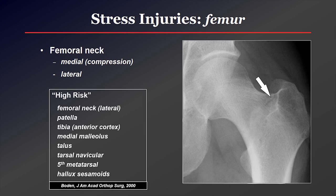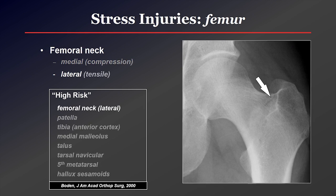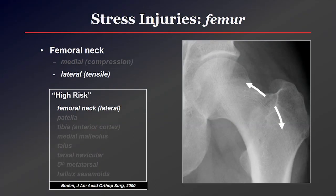The lateral femoral neck is an area of high risk for stress fractures, and here's a list of other high-risk stress fractures in the lower extremity. These are called high risk because they tend not to do well — they either have a high incidence of non-union or poor union, or they go on to displace. The lateral femoral neck is higher risk because that's the tensile side. With its convex architecture on the lateral side, weight bearing with a fracture there tries to pull the fracture apart, giving it a higher risk of propagating further and actually displacing.